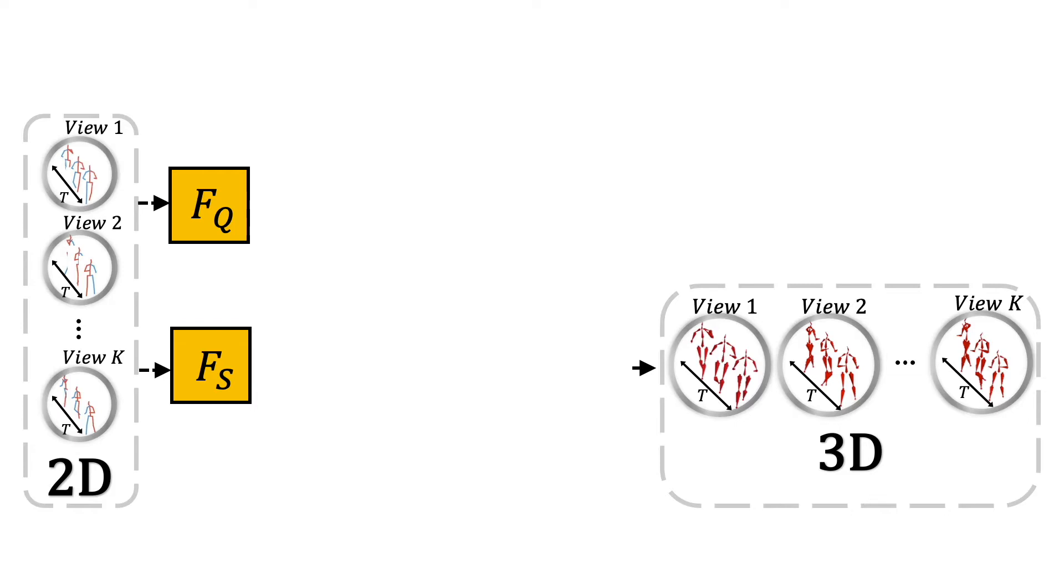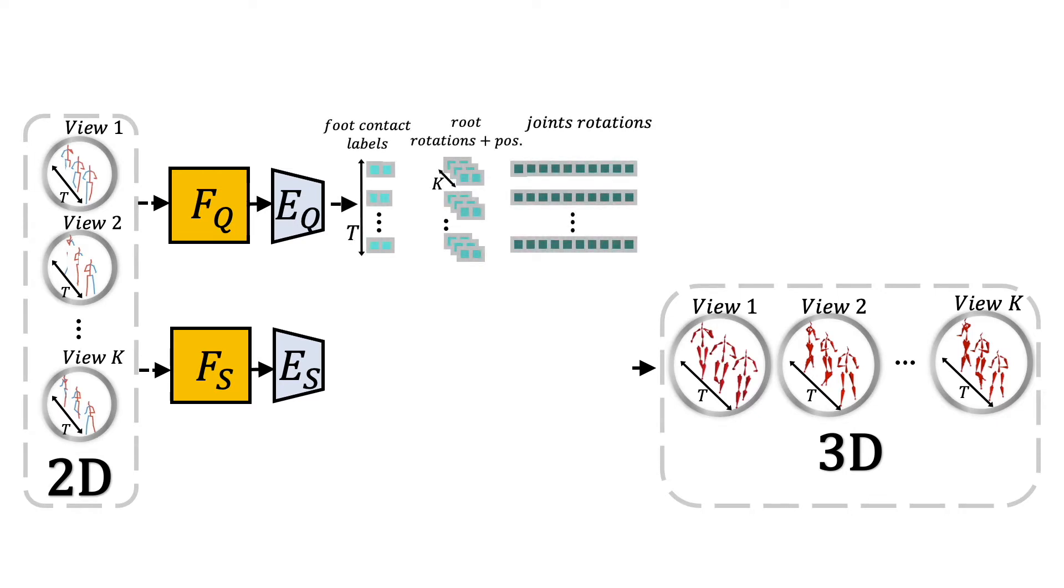Our model is based on MotionNet, a state-of-the-art single-view motion reconstruction method. We use two encoders. The dynamic encoder, EQ, outputs a skeleton-independent sequence of 3D joint rotations, global root positions, and foot contact labels.